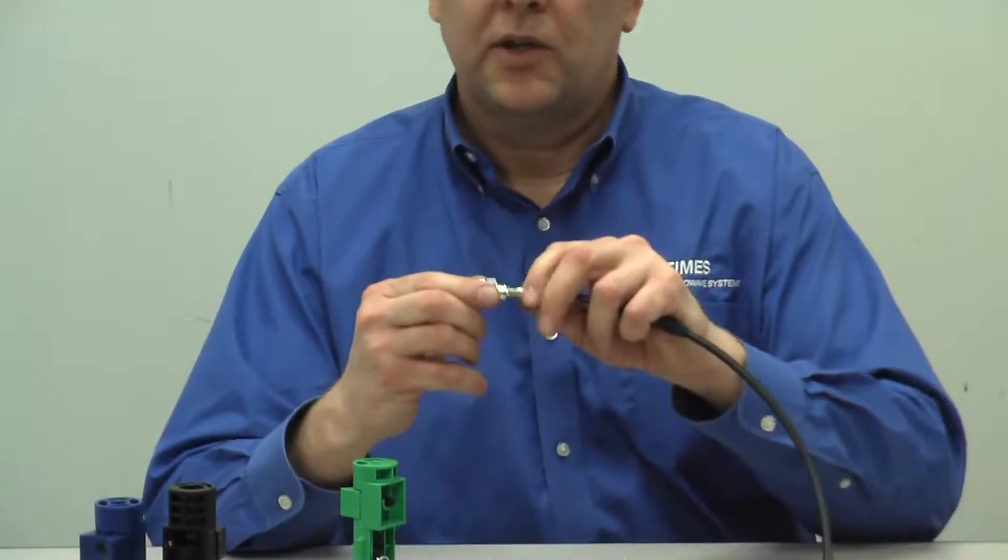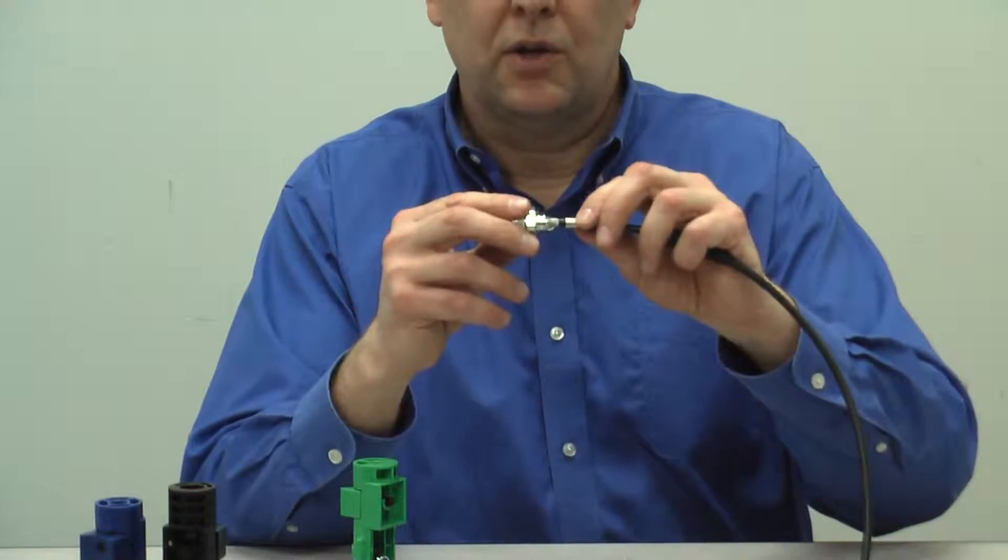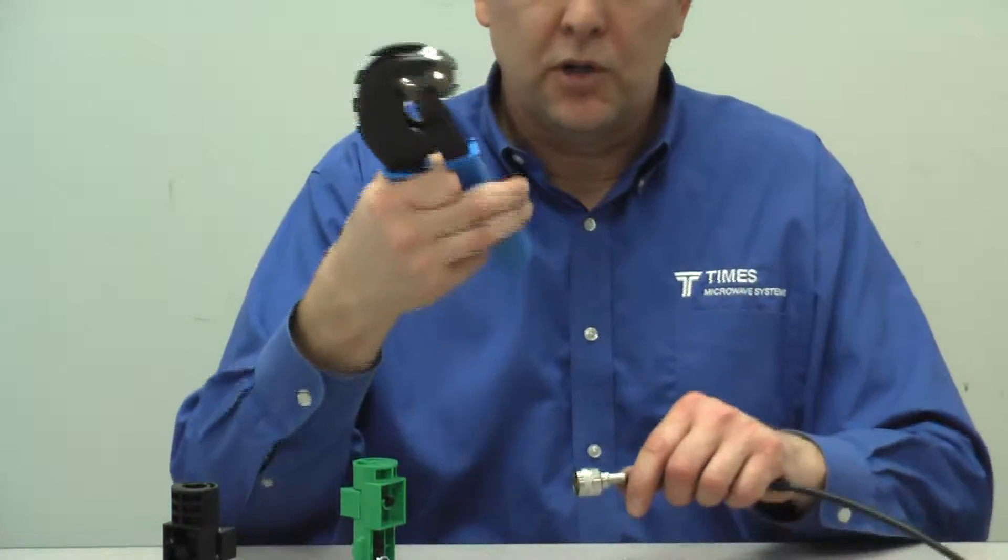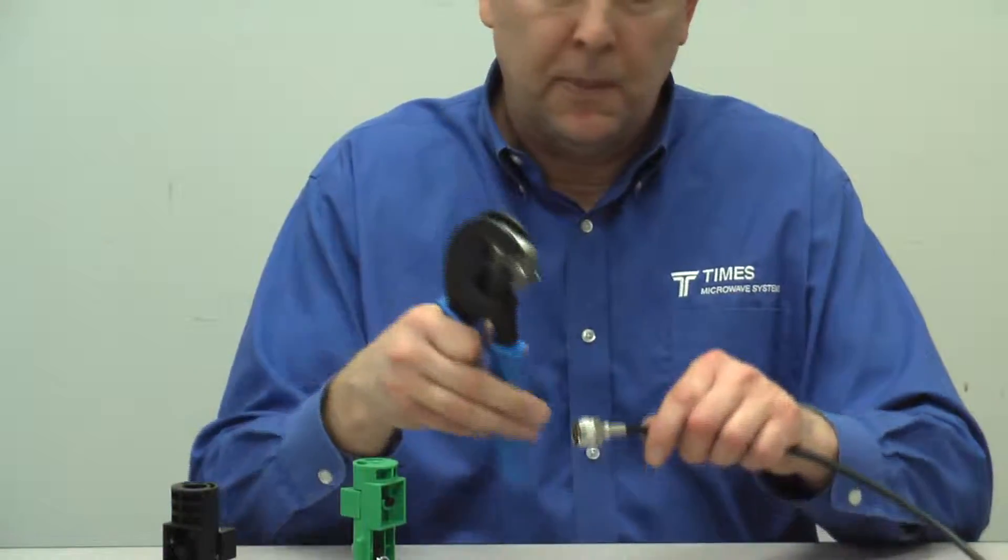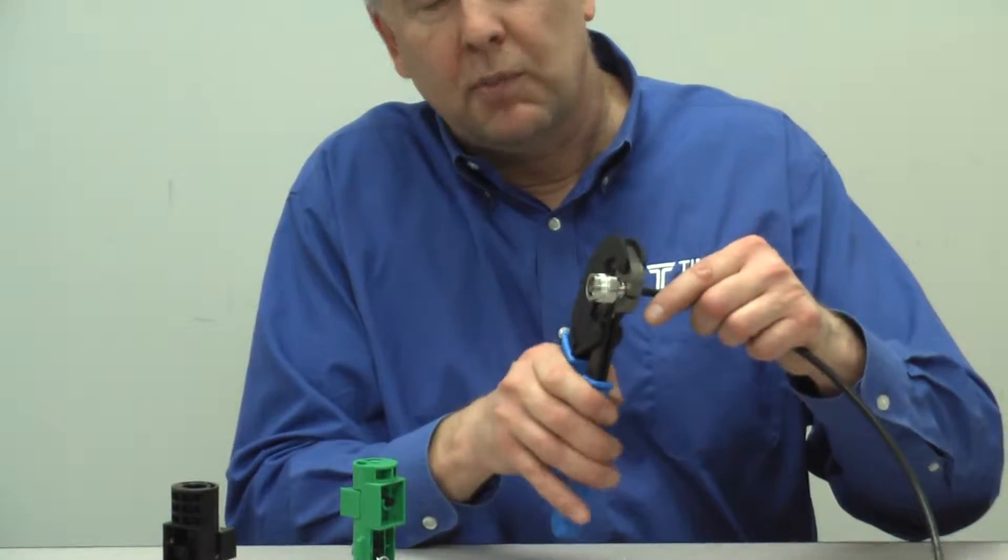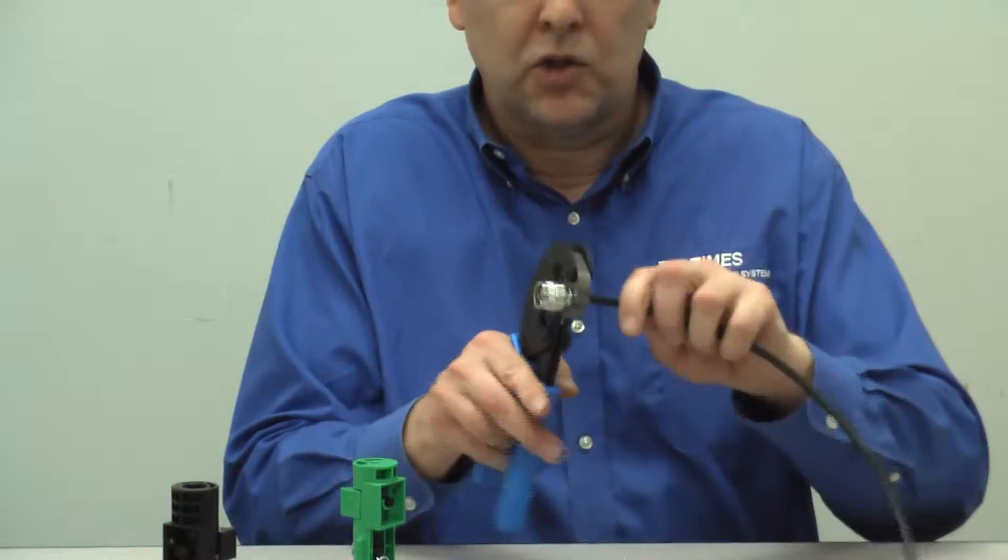At that point, take your ferrule and bring it up. You see the braid wires are right where you want them to be—no more trimming with a pair of scissors. Take your CST-240-200-195-100 tool, it's the largest die here. Crimp it just once, right at the back of the connector, like so.